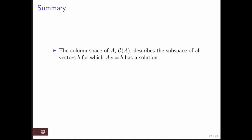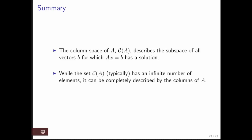So, in summary, the column space of A describes the subspace of all vectors for which AX equals B has a solution. Typically, it has an infinite number of elements. We're going to become very familiar with the column space of A as we move on.